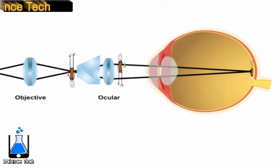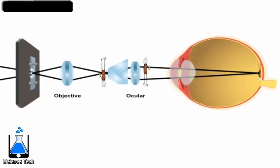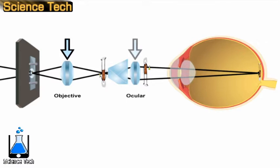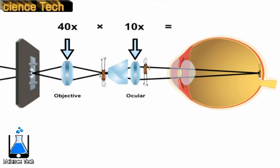Microscopes that utilize multiple lenses, like the one you see here, are referred to as compound microscopes. In a compound microscope, the total magnification is calculated by multiplying the magnification of the objective lens by the magnification of the ocular lens. With a 40x objective and a 10x ocular, the total magnification is 400x.